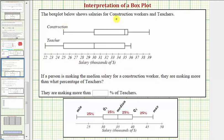The box plots below show salaries for construction workers and teachers. So here we have the box plot for construction workers and the box plot for teachers. And notice how the horizontal axis is scaled by thousands of dollars.